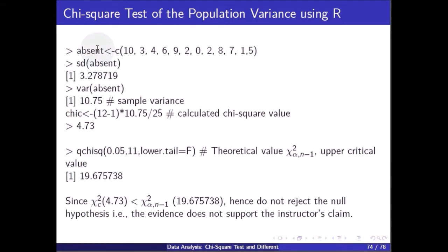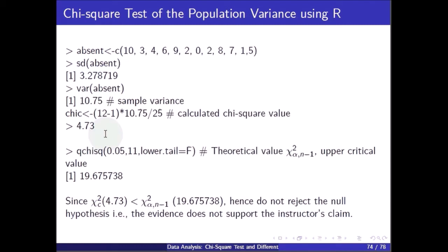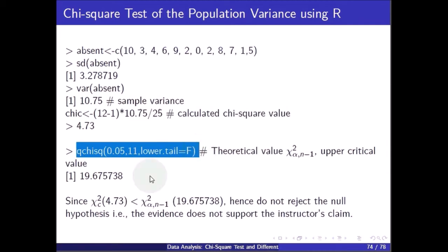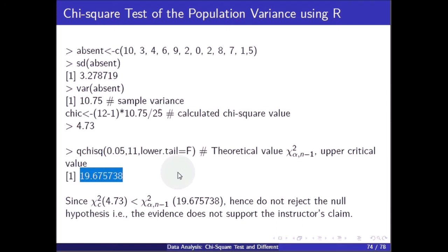For the chi-square test of the population variance using R: we capture the absent data, calculate the standard deviation and the sample variance, then compute the chi-square value, which gives 4.73. The table value is 19.655738. Since the calculated value is less than the table value, we do not reject the null hypothesis — the evidence does not support the instructor's claim.